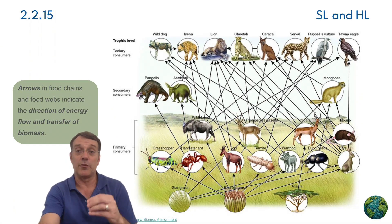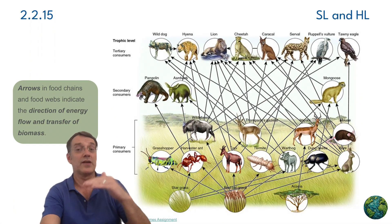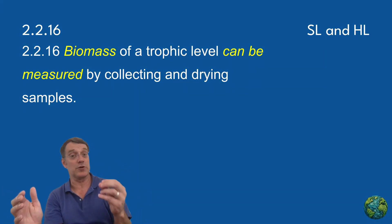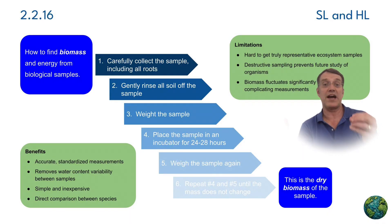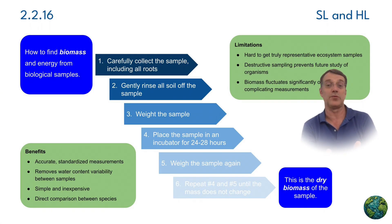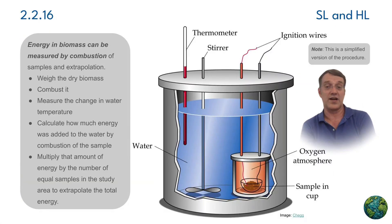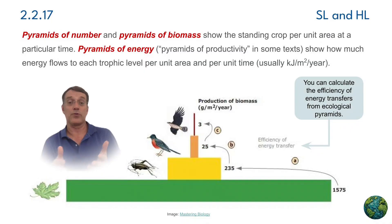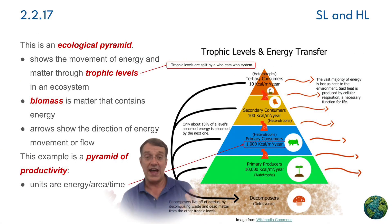Arrows always go from lower trophic levels to higher trophic levels. To study energy flow quantitatively — meaning we measure it with numbers — ecologists measure biomass at different trophic levels. This involves collecting and carefully drying samples to remove all of the water content, leaving only the dry organic matter as biomass. This biomass data can then be used to construct ecological pyramids that represent the relative numbers of organisms, the relative biomass at each trophic level, or the energy at each trophic level.